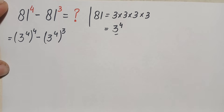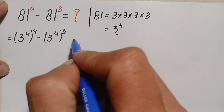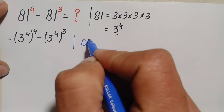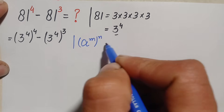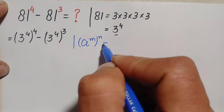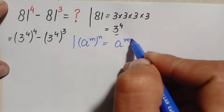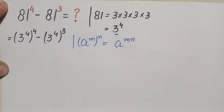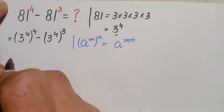In both terms we will use the exponential identity: a^m raised to the power n, which can also be written as a to the power m times n. Using this identity, we will multiply the powers with each other.